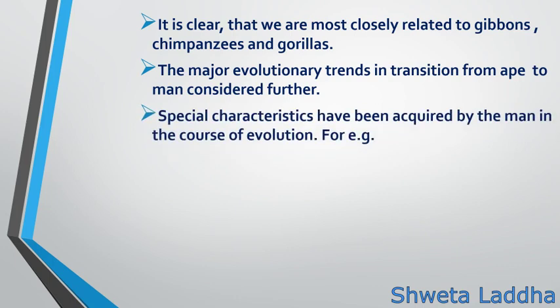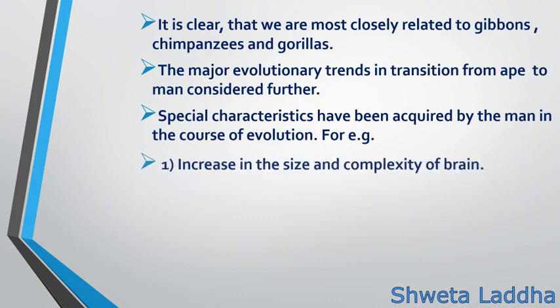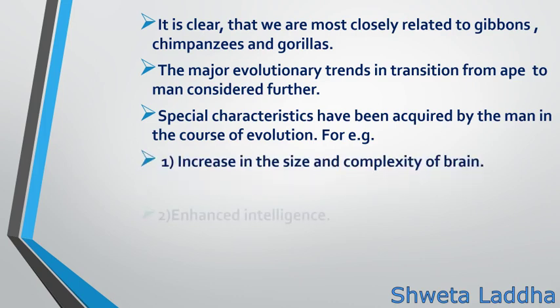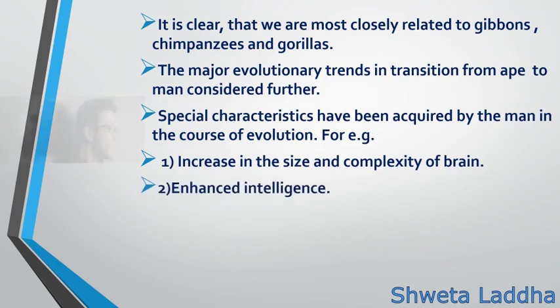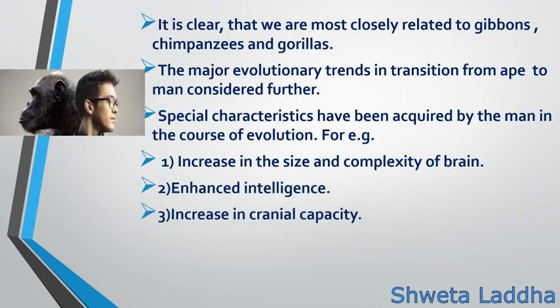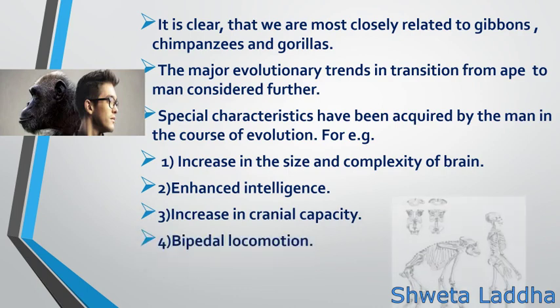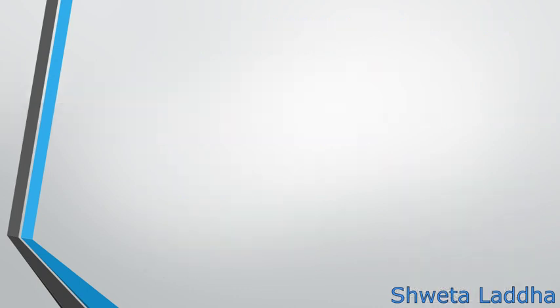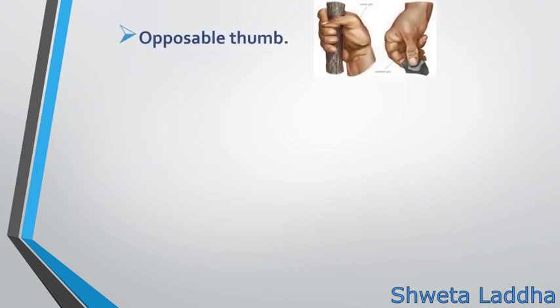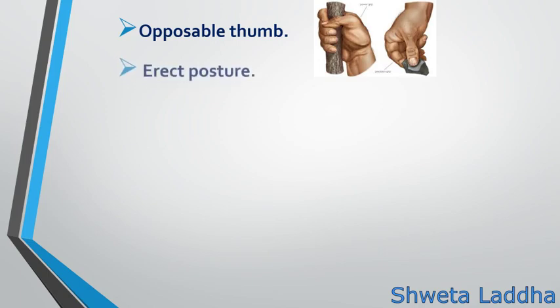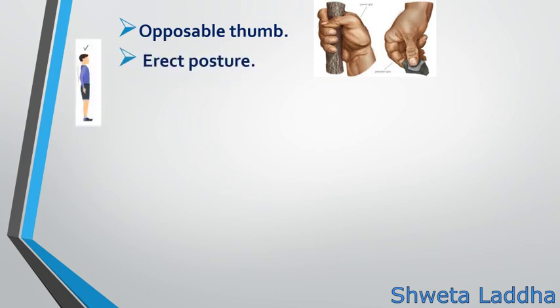Special characteristics have been acquired by man in the course of evolution. For example, increase in the size and complexity of the brain, enhanced intelligence, increase in cranial capacity, bipedal locomotion from the quadrupedal. Also, the opposable thumb made it possible for humankind to hold objects and grab things properly. Erect posture made them walk properly on two legs.